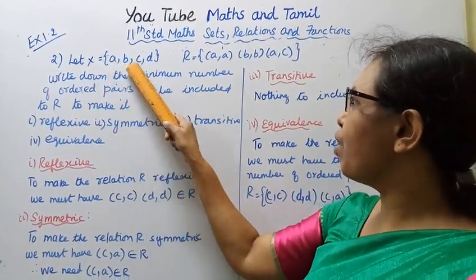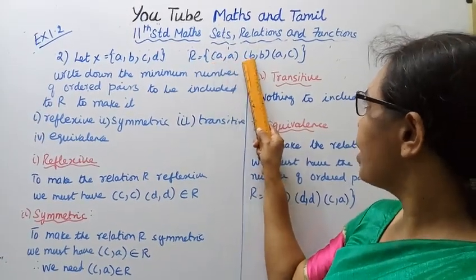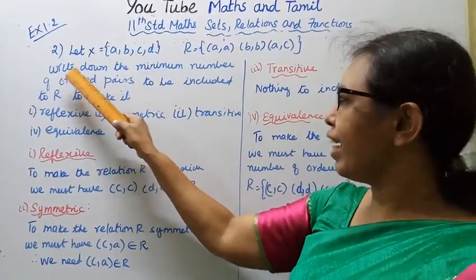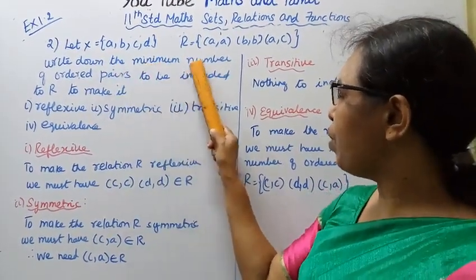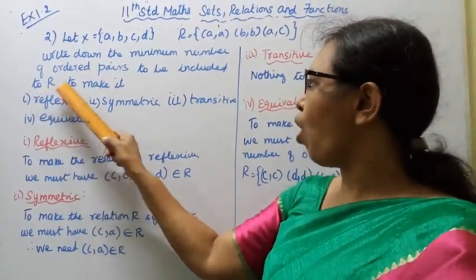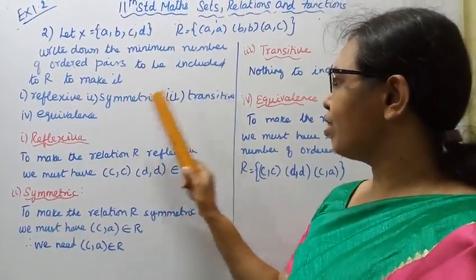Let X equal to {a, b, c, d} and R equal to {(a,a), (b,b), (a,c)}. Write down the minimum number of ordered pairs to be included to R to make it reflexive, symmetric, transitive, and equivalence.